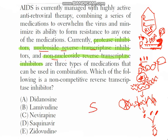We studied in biochemistry that enzymes have two sites: the active site and the non-active site (allosteric site). Didanosine, lamivudine, and zidovudine are nucleoside reverse transcriptase inhibitors — they act like nucleotides and bind to the active site of the enzyme, blocking further attachment of new nucleotides.